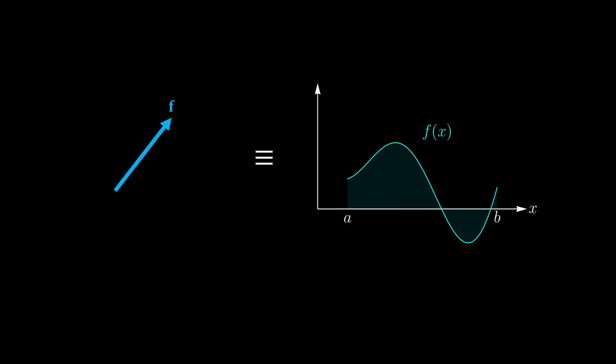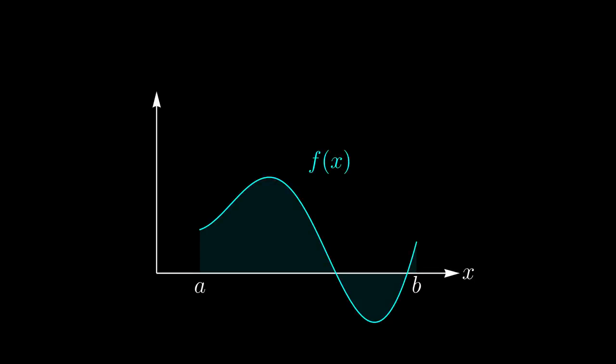Let's try to understand how it is possible that a function can be seen as a vector. Actually, there is a very easy way to understand this. Consider the vector space of all functions f defined in the interval between x equals a and x equals b. Here is an example of one such function living in that space. Note that a and b could be minus infinity and plus infinity, but for now, let's take them as some real values.